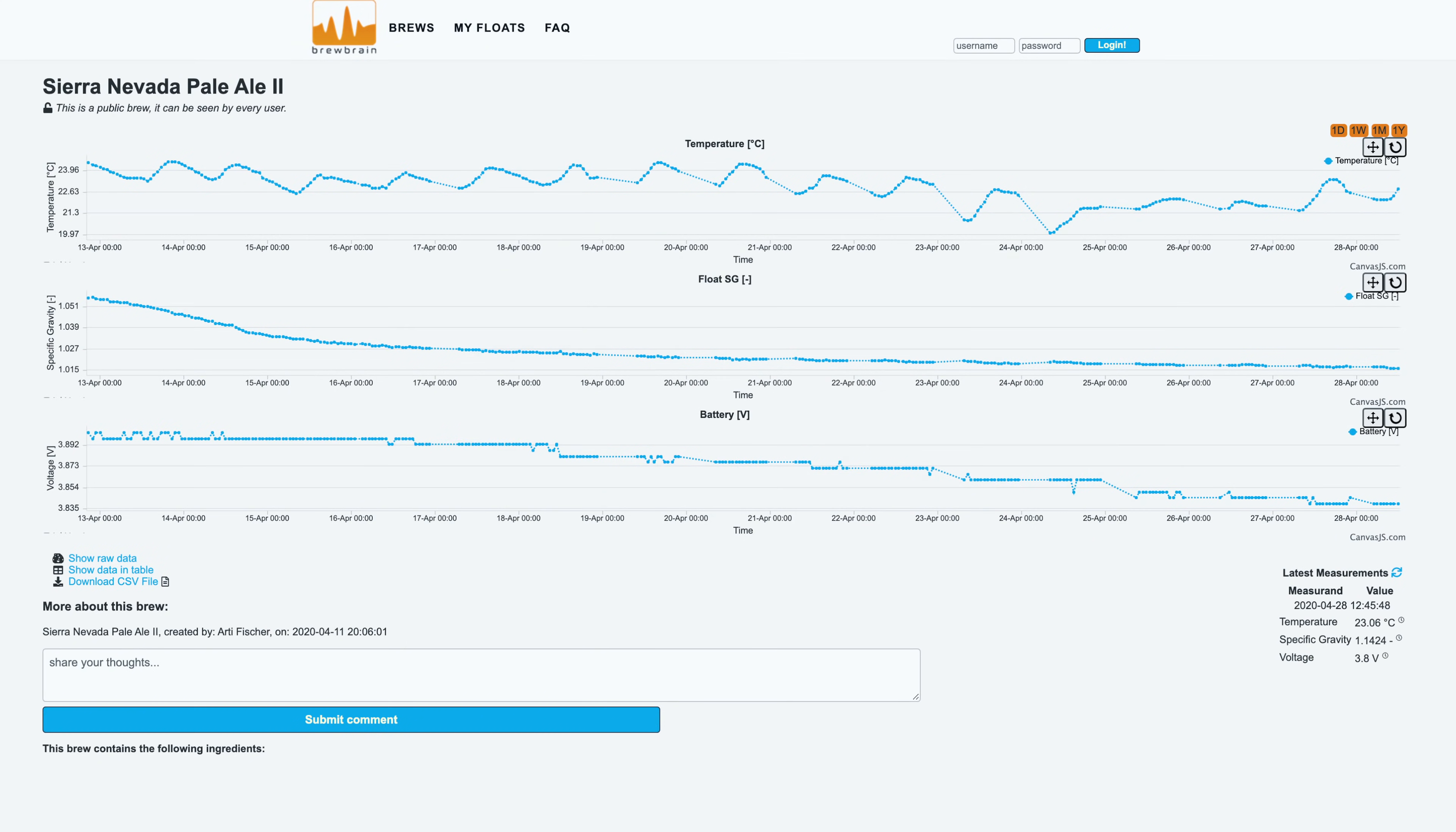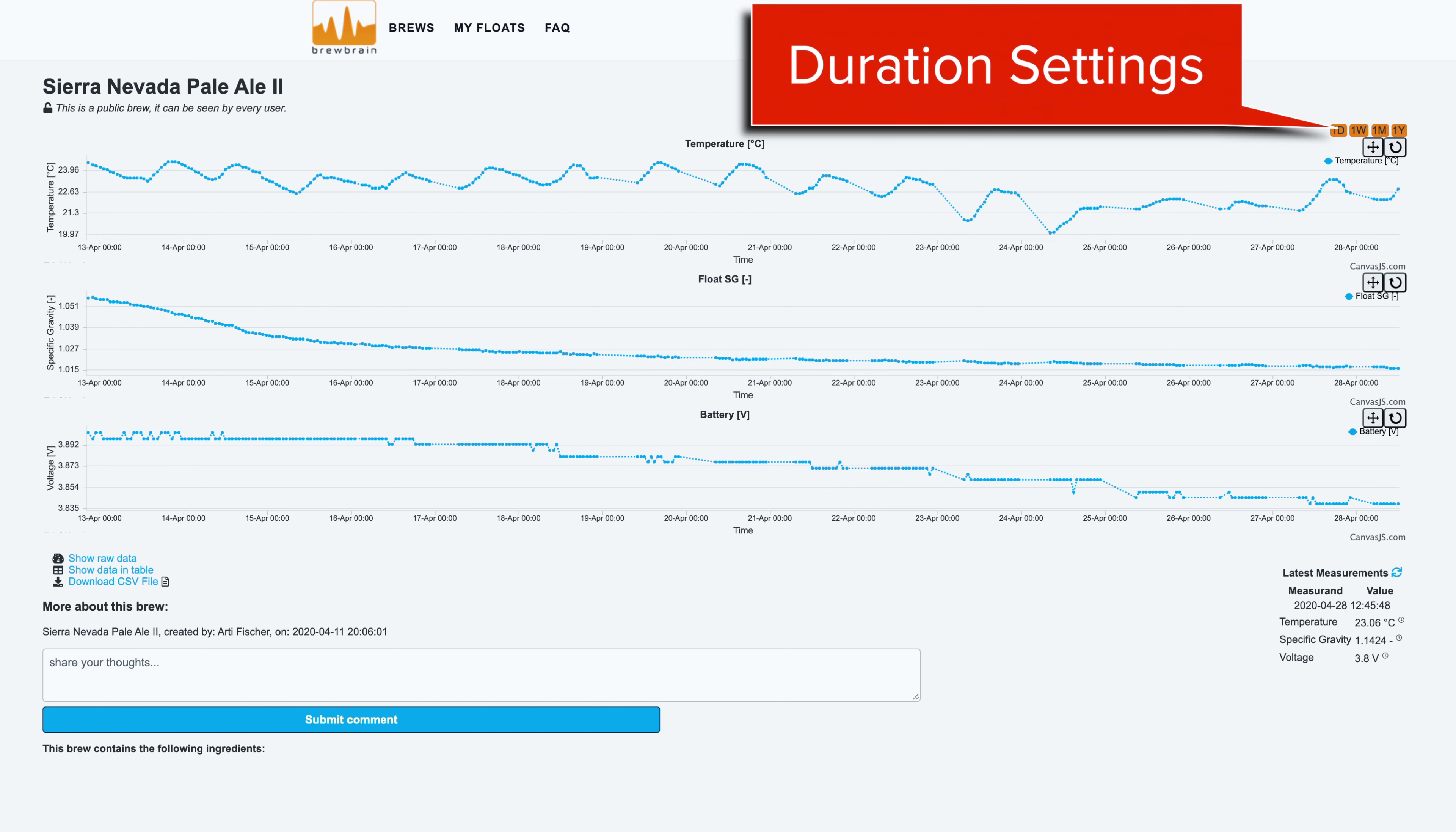Here is an example of a public shared fermentation. Personally I really like the uncluttered graphs, with separate ones offered for temperature, gravity and battery life. All important stuff. You will also note that there is the facility to show this data in various different time formats as well.